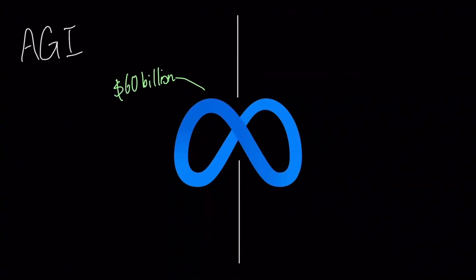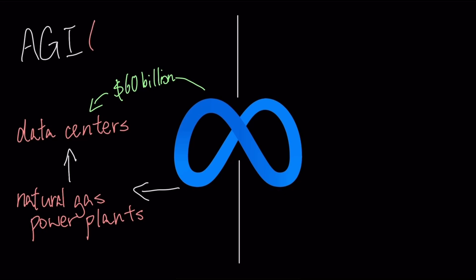Their first strategy is to go insane on compute. Meta is spending $60 billion on data centers, even building their own on-site natural gas power plants to fuel this machine. They're betting on what worked for GPT-4: more data and more power.